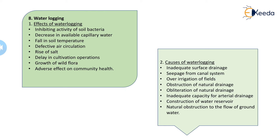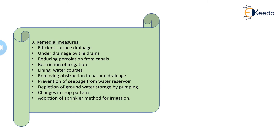Other causes of waterlogging include: over-irrigation of the field; obstruction or obliteration of natural drainage due to improper maintenance; inadequate capacity for arterial drainage; construction of water reservoirs; and natural obstructions to the flow of groundwater. Once a natural obstruction exists between the ground surface and the groundwater table path, waterlogging will certainly be caused.